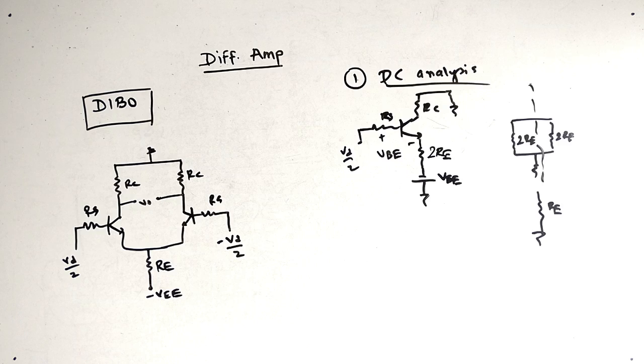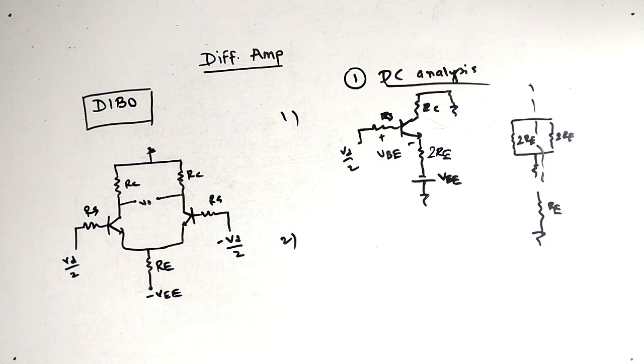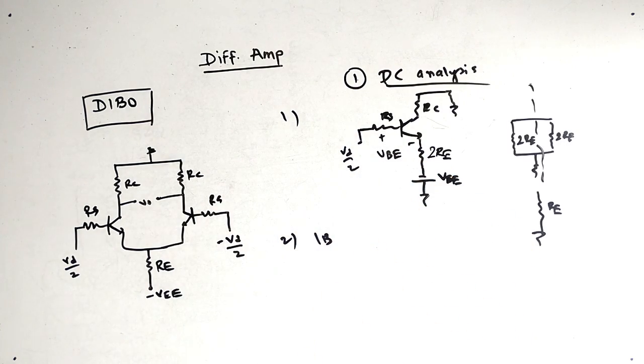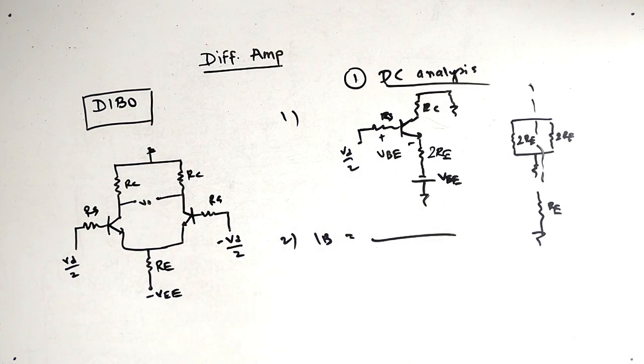So the twice RE concept is clear. So this was the first step. Second step is to apply DC analysis. So to get the value of IB we have to apply KVL in the base loop.